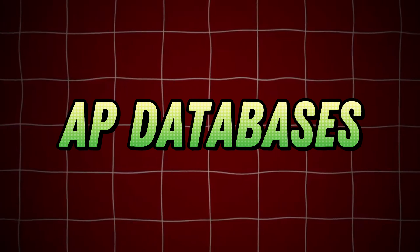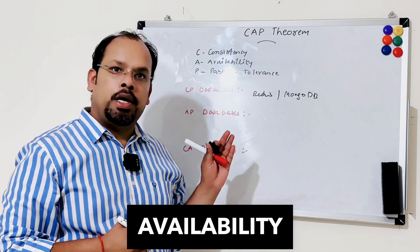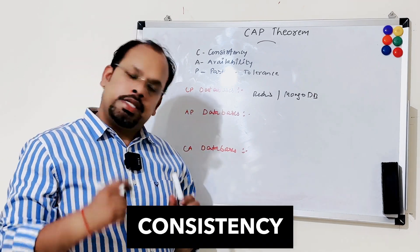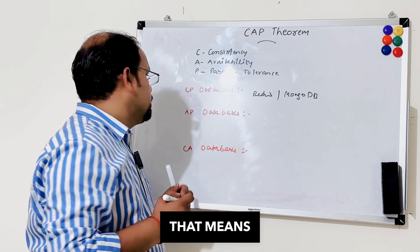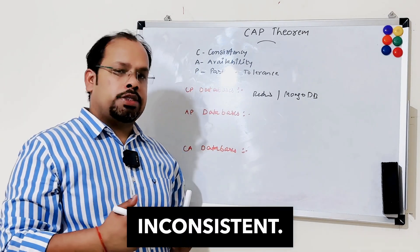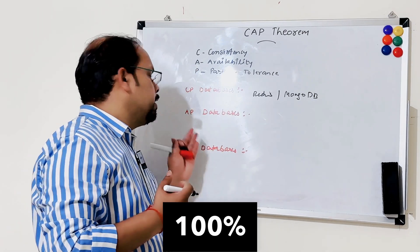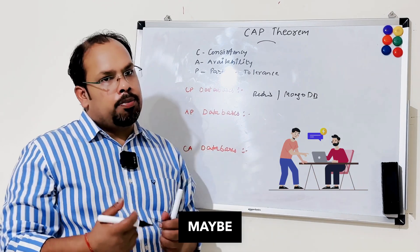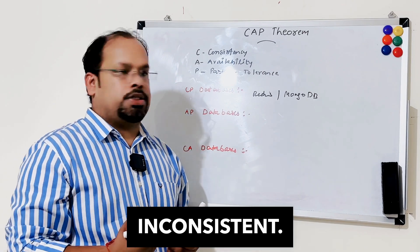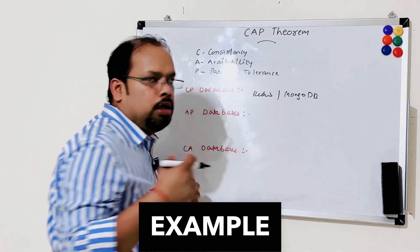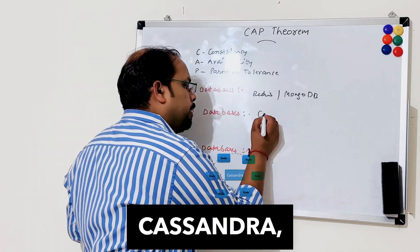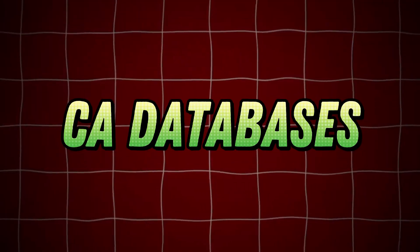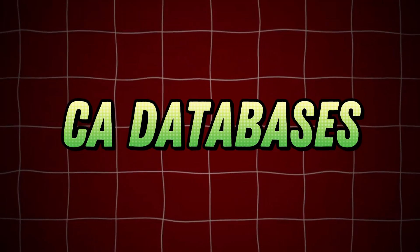Another category is AP — here we have availability and partition tolerance. When a partition happens, consistency may be a problem, meaning data may be inconsistent. But since we have 100% availability, we will get a response, though the data may be older or inconsistent. Examples of this type of database are Cassandra, CillerDB, and CouchDB.